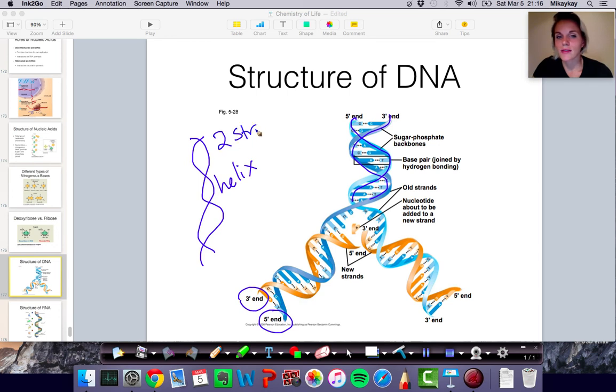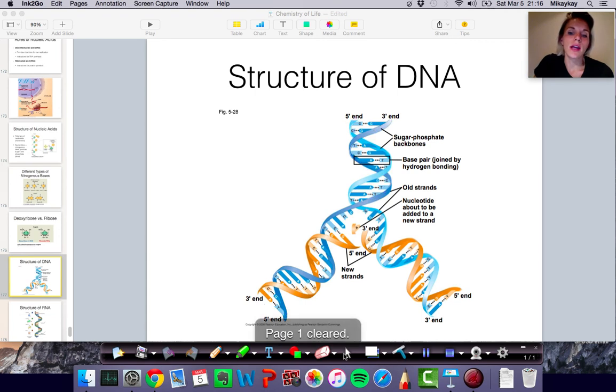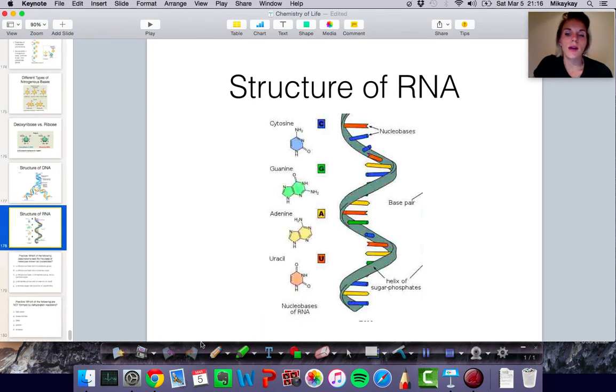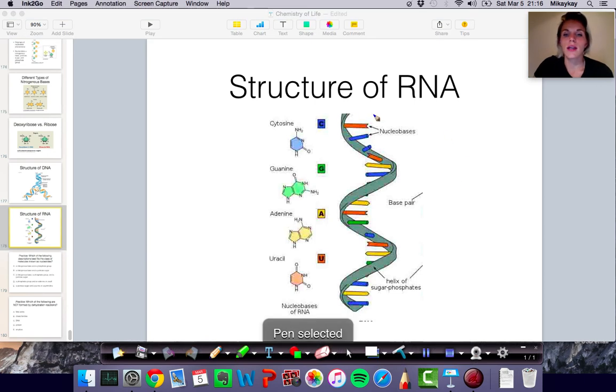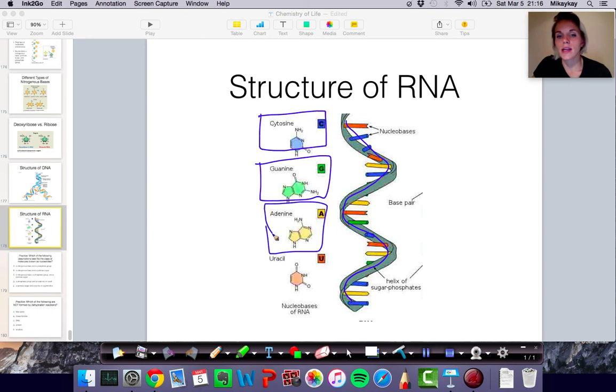The structure of RNA, as you'll remember, is a single strand. So you have a single strand of nucleotides that are connected. And what you'll know, or what you should know, is that RNA has cytosine, it has guanine, it has adenine, and it also has uracil. Whereas in the case of DNA, it does not have uracil, it has thymine.